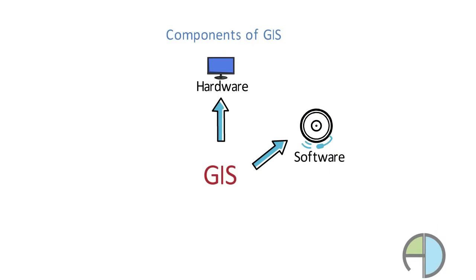Third component is the most important component that is data. GIS is like any other system, garbage in garbage out kind of a system. So quality of data is very important.